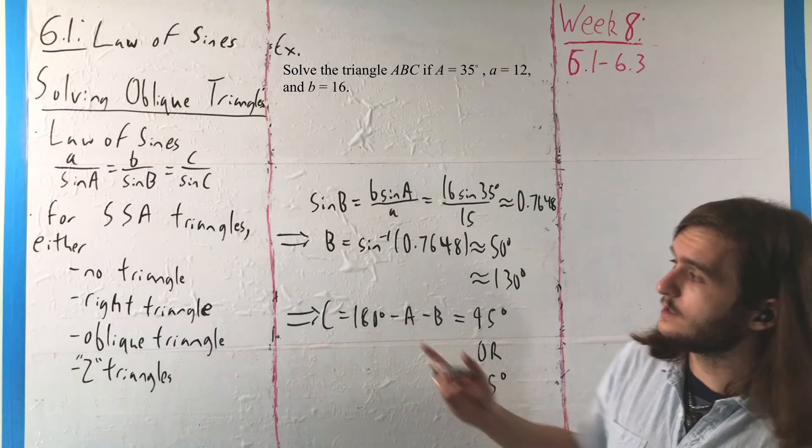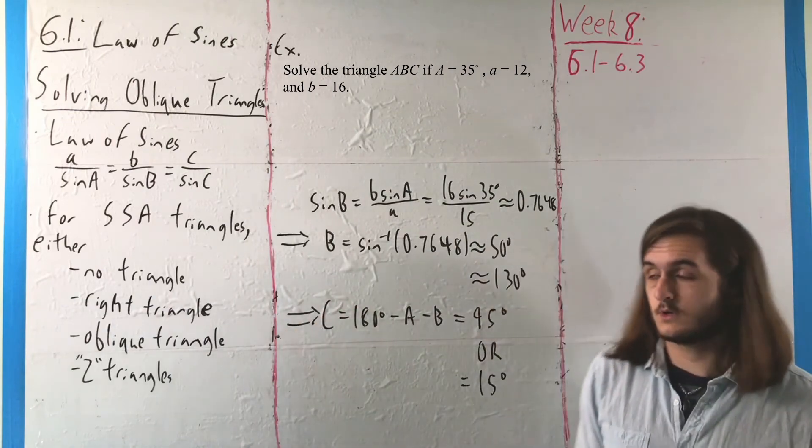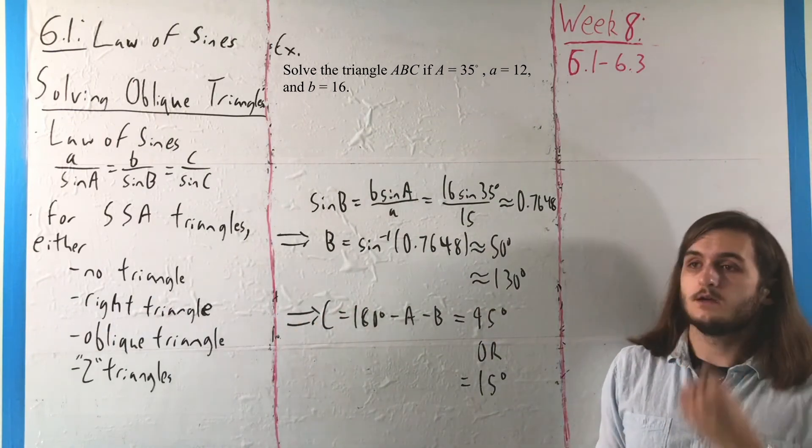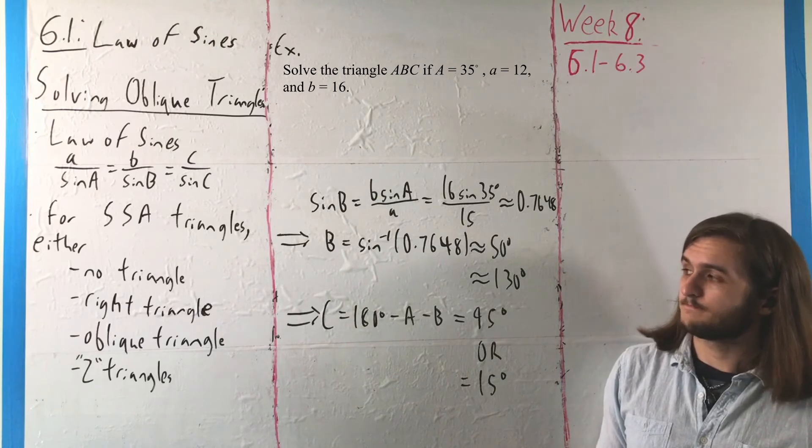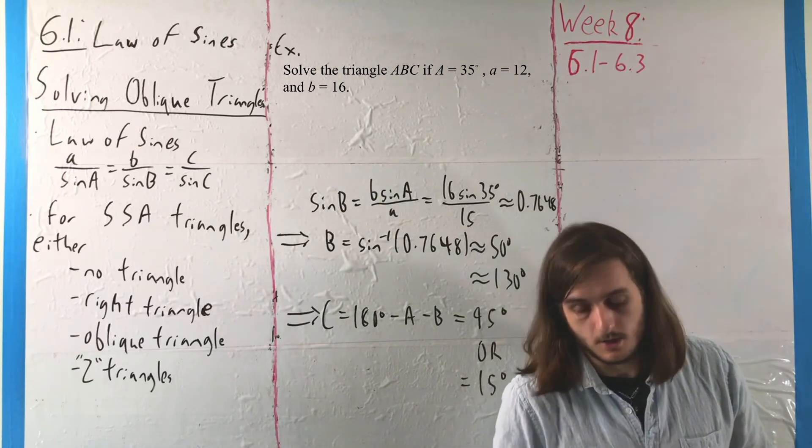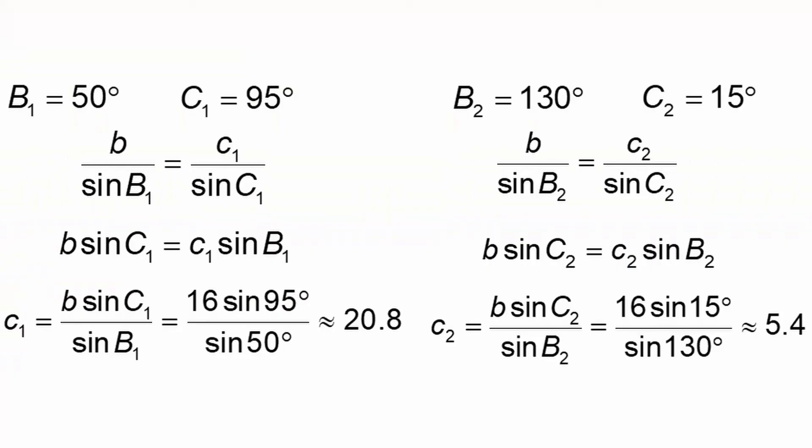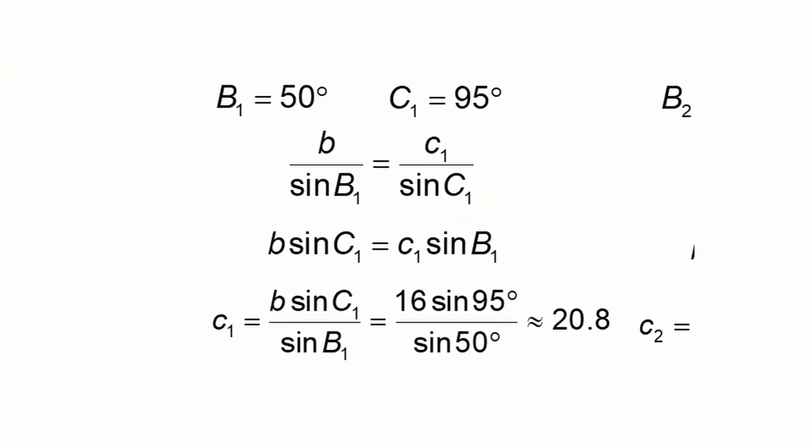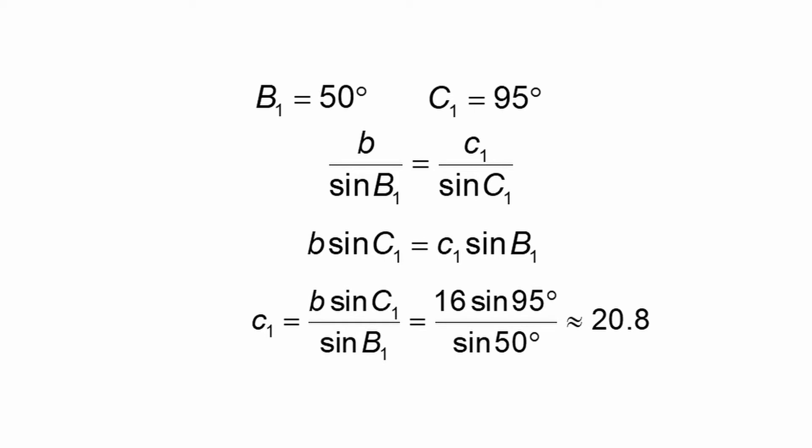And as a result, we have two different triangles that we can work with. They're both equally good as solutions. So if we want to get these solutions, we can proceed using the law of sines pretty directly. That is, we would have B1 and C1 in terms of 50 and 95. Using the law of sines, we would get that small c1 is equal to B times sine of C1 over sine of B1.